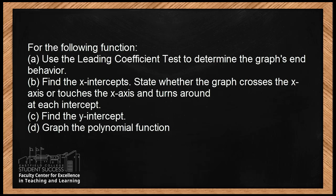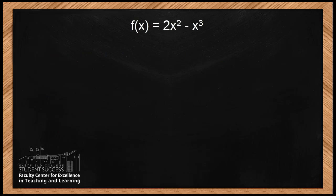The first thing we're going to do is read the problem. For the following function: Part A, use the leading coefficient test to determine the graph's end behavior. Part B, find the x-intercepts, state whether the graph crosses the x-axis or touches the x-axis and turns around at each intercept. Part C, find the y-intercept. Part D, graph the polynomial function. Our function is f(x) = 2x² - x³.